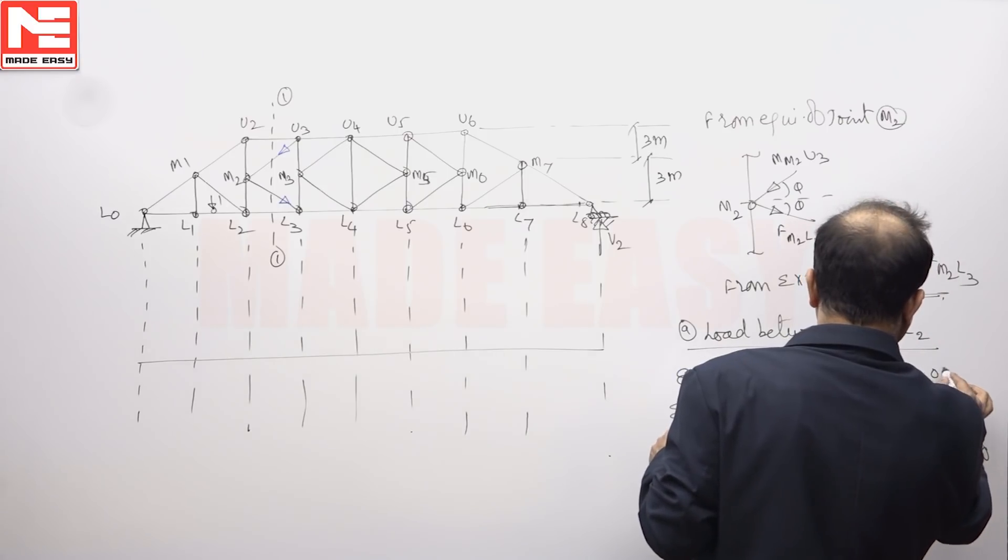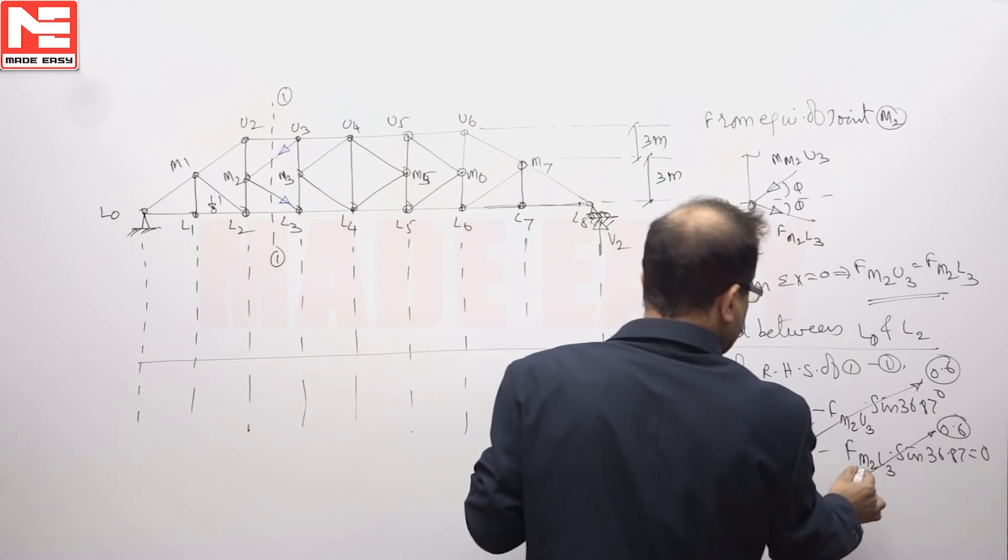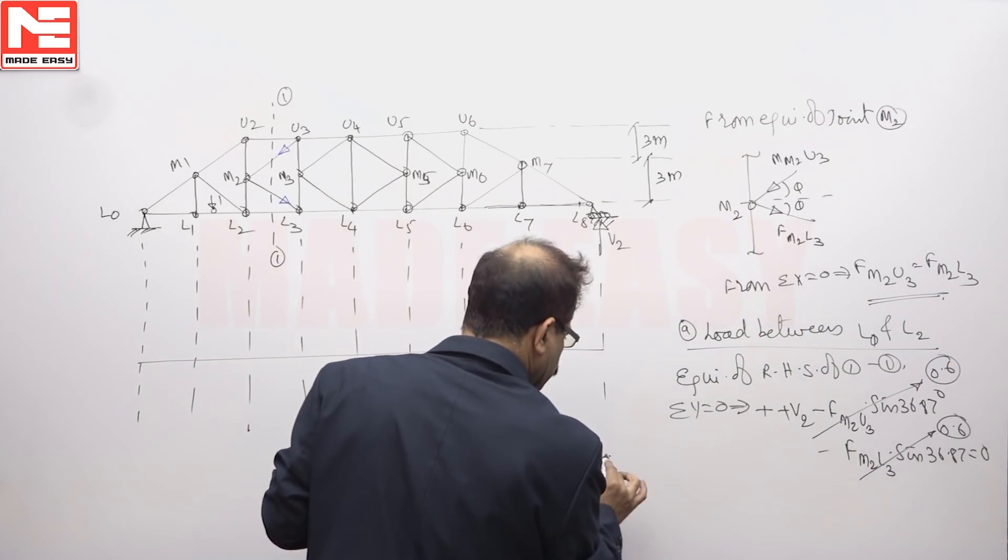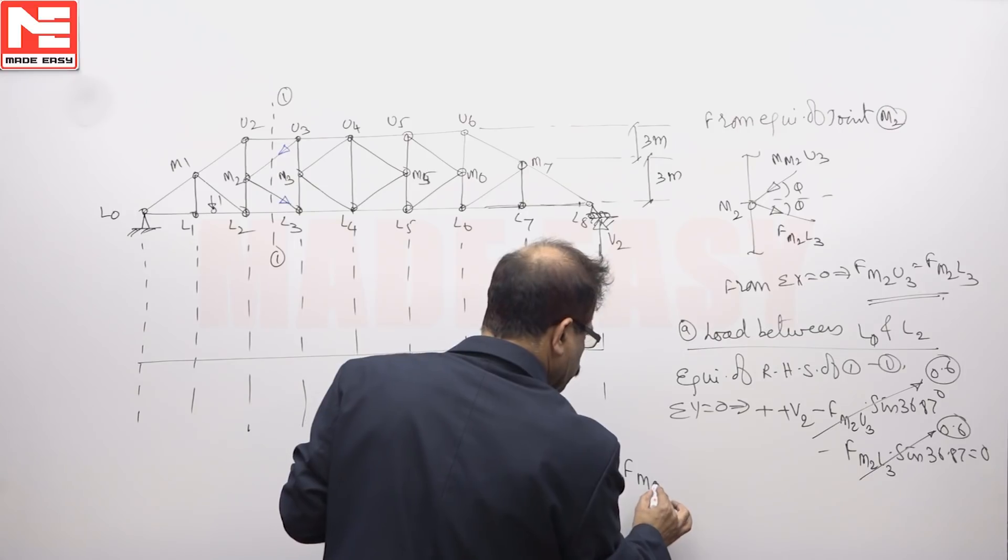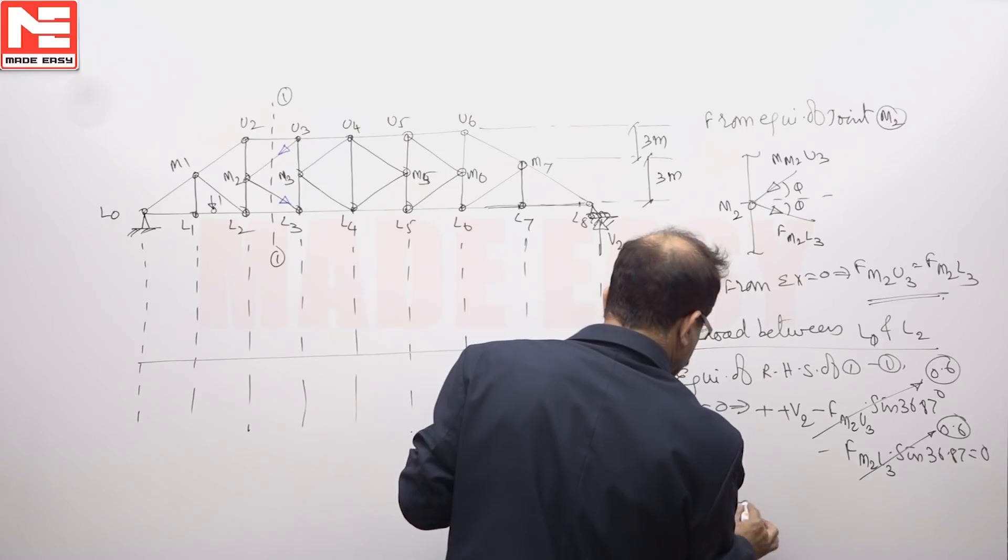This value is 0.6 and M2 L3 is equal. So FM2 U3 is equal to V2 by 1.2.